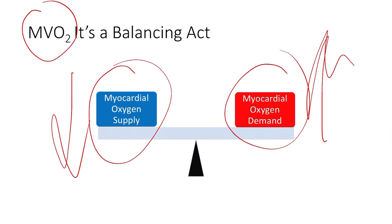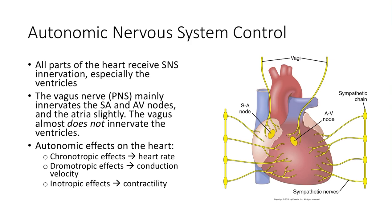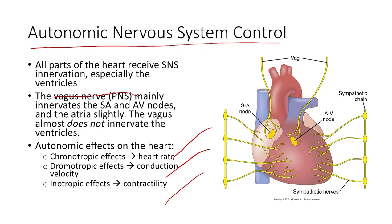All parts of the heart receive sympathetic nervous system innervation, especially the ventricles. The vagus nerve innervates the SA node and AV node, with very little effect on the ventricles themselves, but the tone is typically set by the SA and AV nodes. Autonomic effects include chronotropic effects on heart rate and dromotropic effects on conduction and contractility. If we're being chased by a saber-toothed tiger, we want the heart to beat faster, stronger, and conduct faster — so this makes a lot of sense.